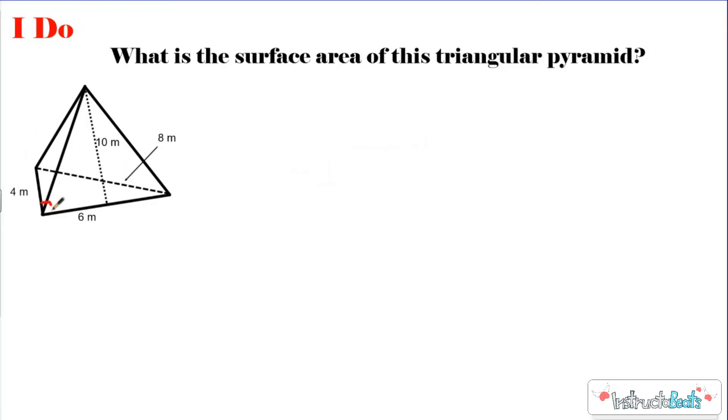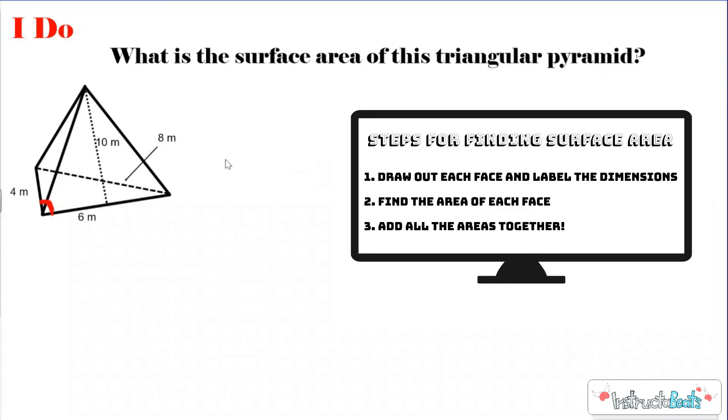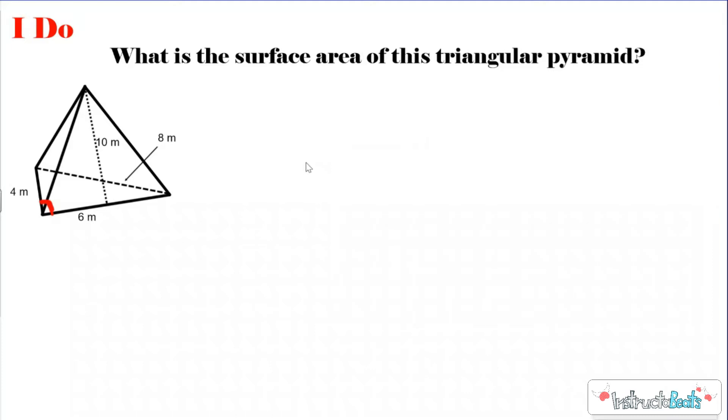Here we have a right triangle that's going to be the base. We have a 4, 6, 8 right triangle. And we have three lateral faces. Remember, lateral faces are the faces on the side, anything that's not the top or the bottom. It's made up of three lateral sides, and it has a slant height of 10, and that's going to be very helpful to us. Our steps for finding surface area is to decompose it into the sides, find the measurements that you need, and then find the area of each face and add them together.